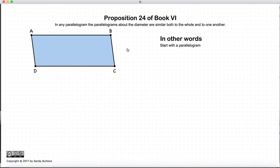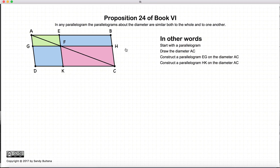Now in this proposition, we start with a parallelogram, we draw a diagonal in the parallelogram, and then we construct two new parallelograms where the vertex of each of the parallelograms is along the original diameter.